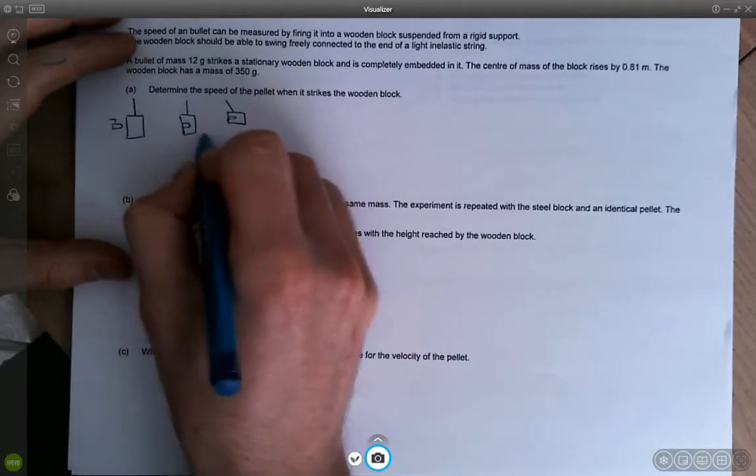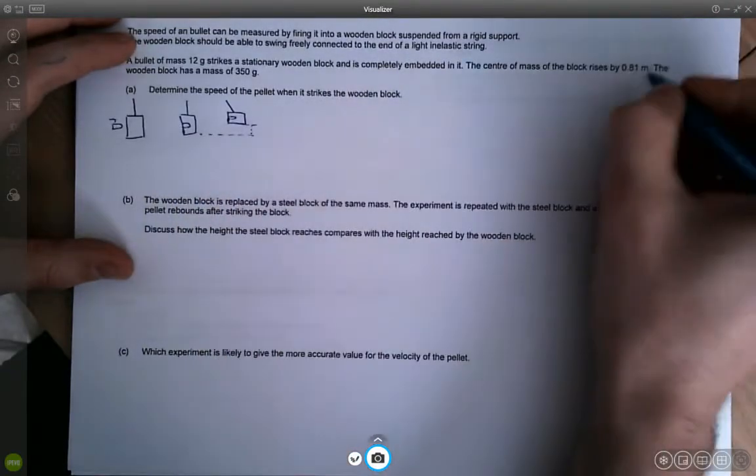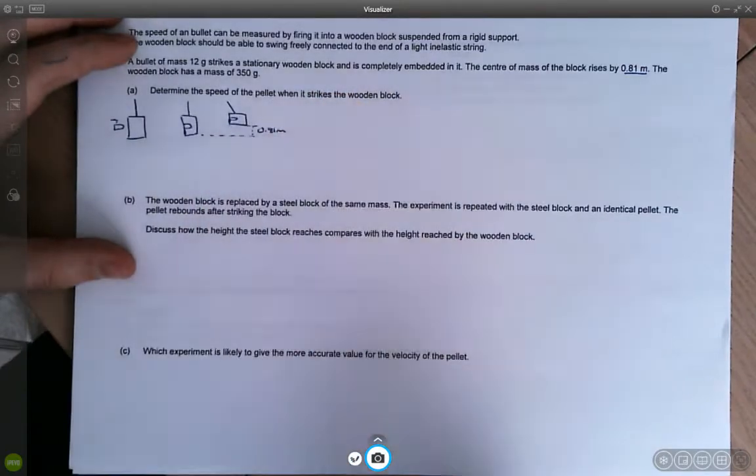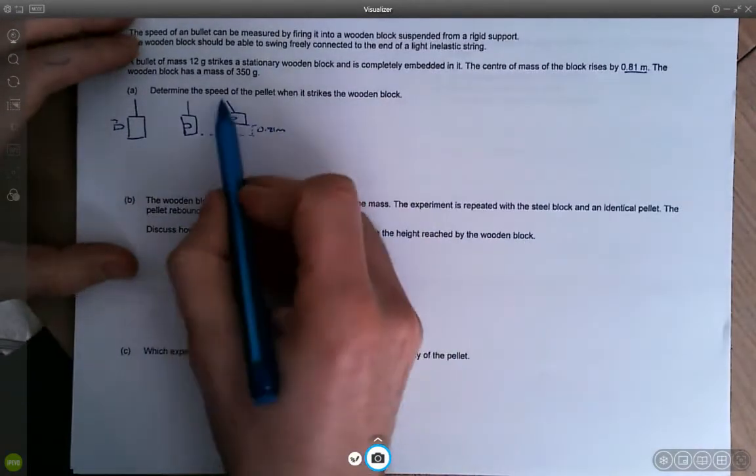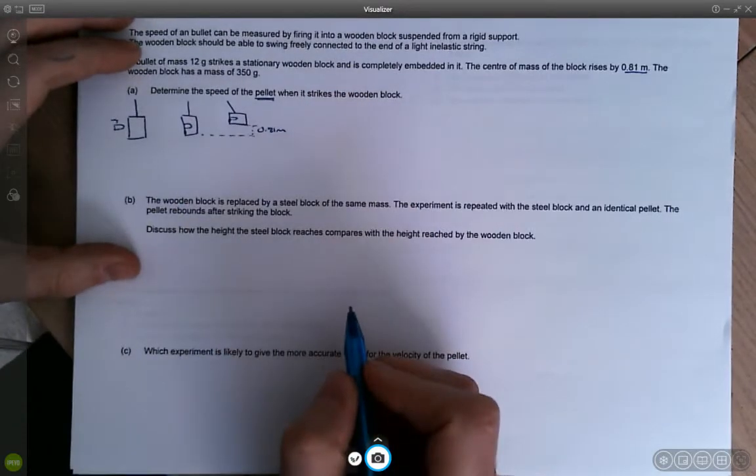And then it tells us in the question that the change in height of the center of mass of the block is 0.81 meters. And it tells us to determine the speed of the pellet, importantly the pellet, when it strikes the wooden block.